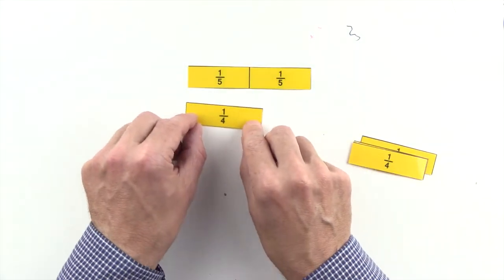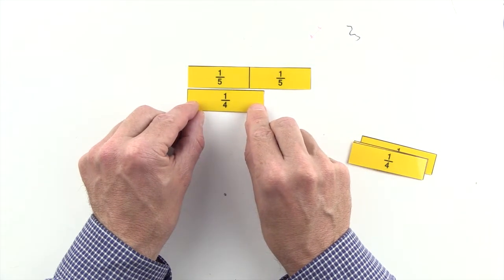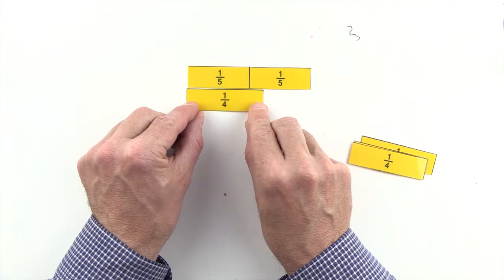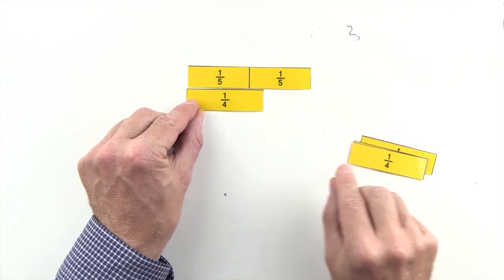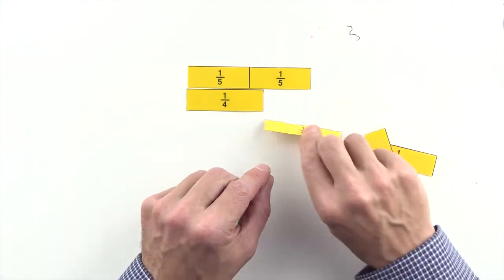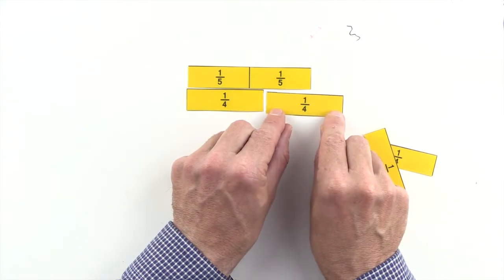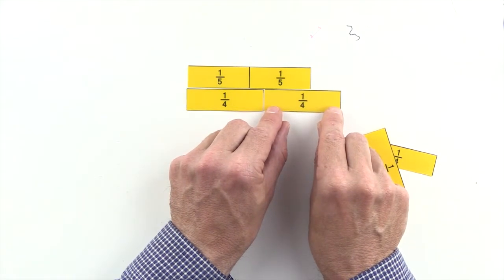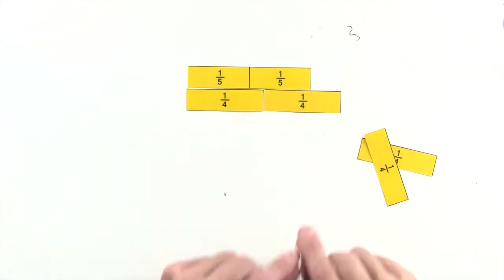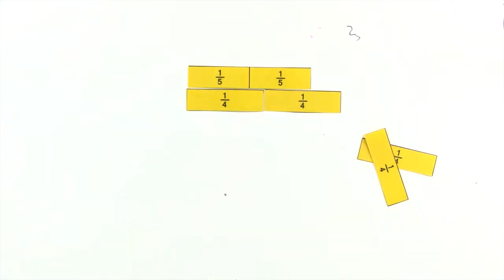One-quarter is less than two-fifths, and two-quarters are greater than two-fifths, so we can't use quarters to make an equivalent fraction to two-fifths.